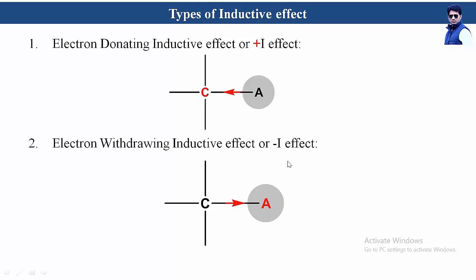This classification is based on the nature of atom A. When A releases electrons to the carbon atom, it is known as the electron donating effect. When A withdraws electron density from the carbon atom, it is the electron withdrawing effect.